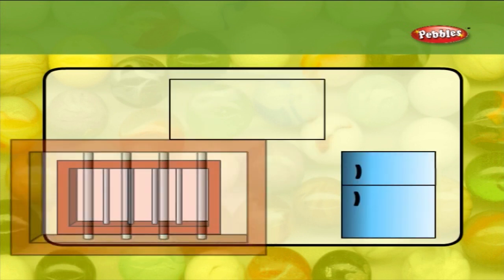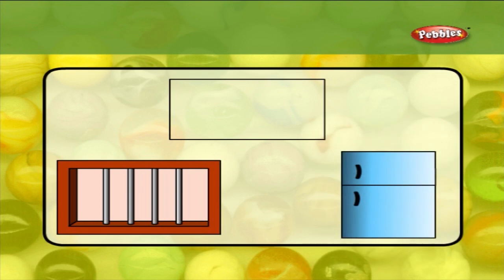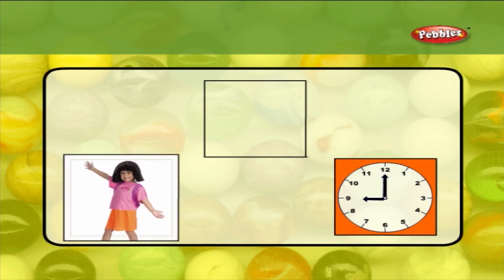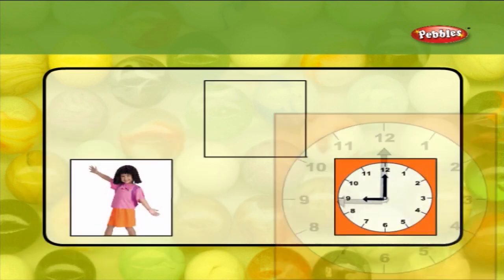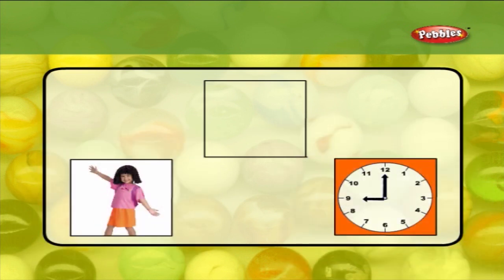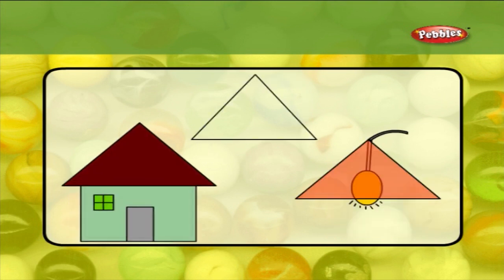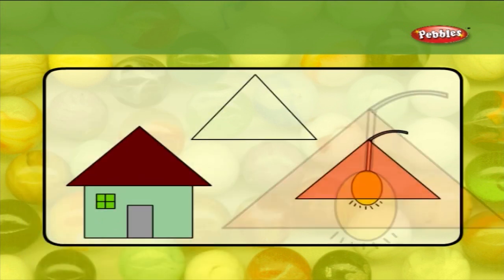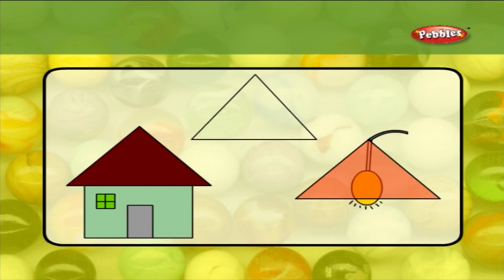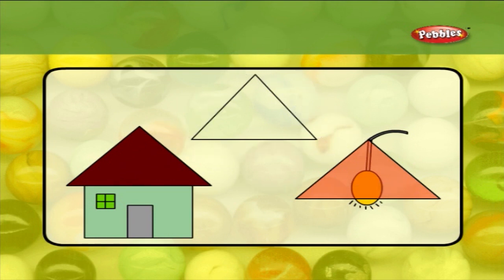A window and a refrigerator have the shape of a rectangle. A photo frame and a clock can be seen in a square shape. And a house roof and a lampshade can be seen in the shape of a triangle.